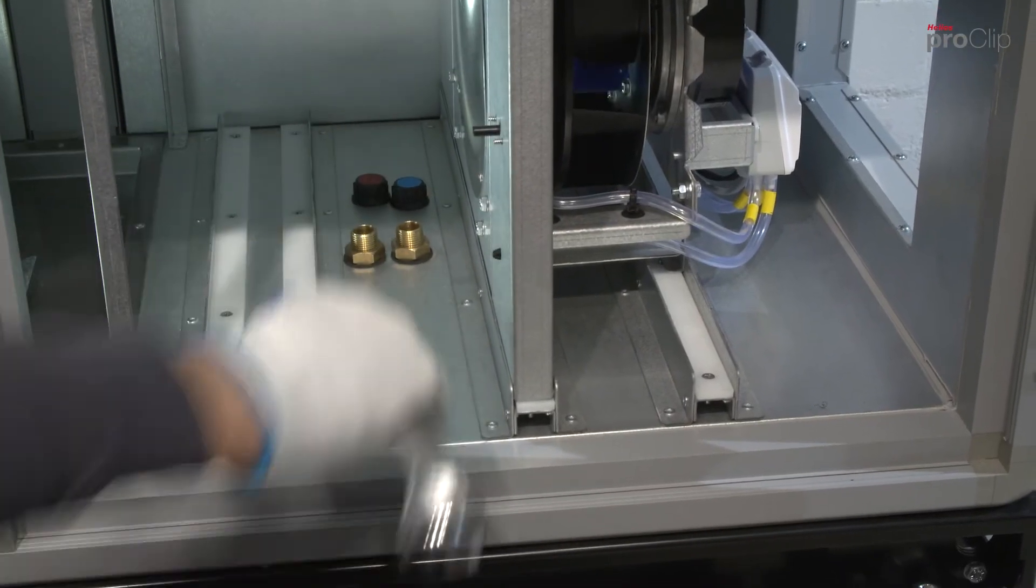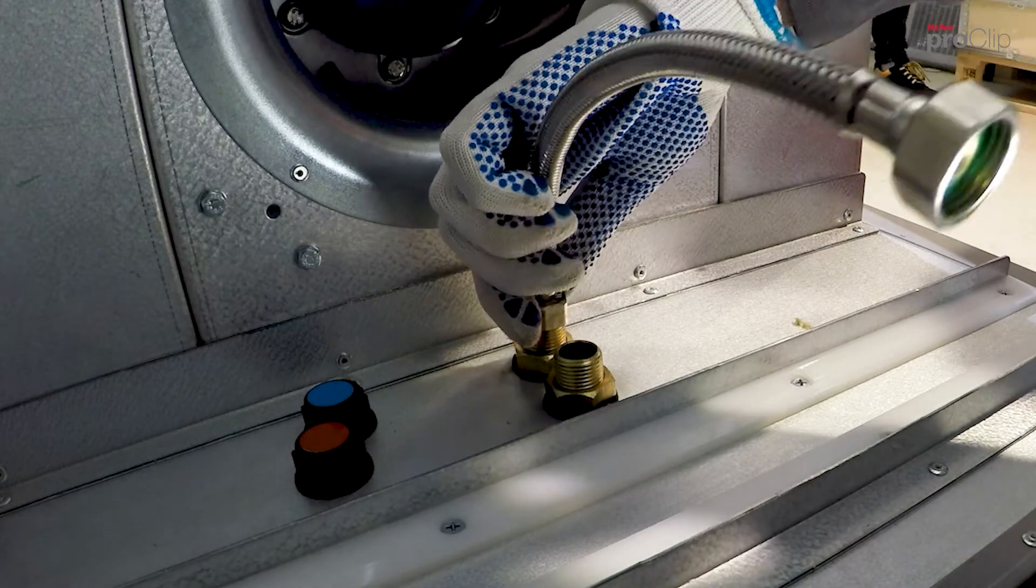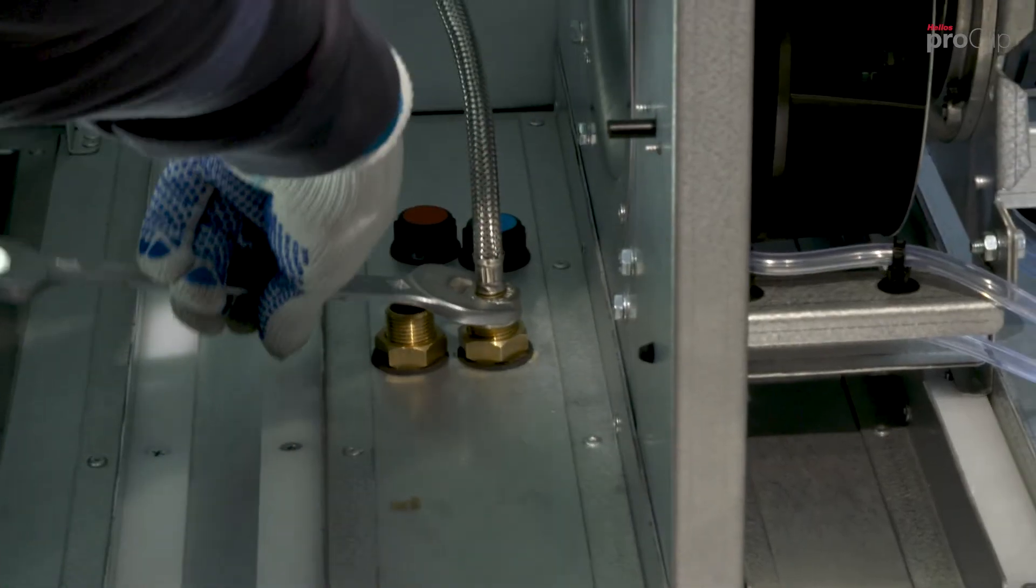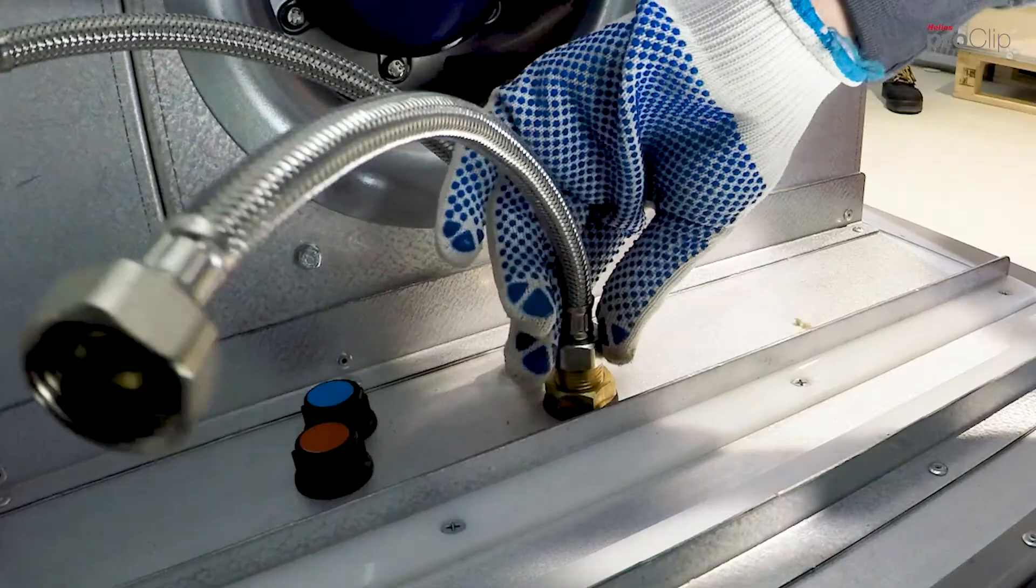Start by installing one of the two flexible connection tubes to the flow or return and tighten it before installing the second connection tube.